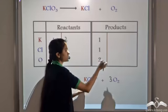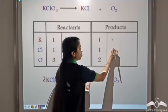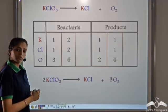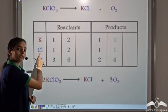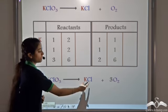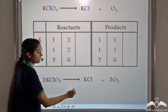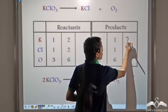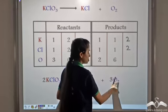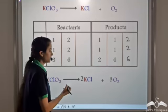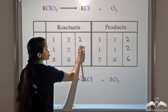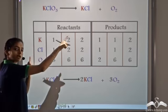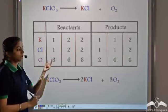On the product side, Potassium remains 1, Chlorine remains 1, but now we have 6 atoms of Oxygen. Now Potassium and Chlorine are not balanced. To balance them, we multiply KCl by 2, taking 2 molecules of KCl. This gives us 2 atoms of Potassium and 2 atoms of Chlorine on the product side, while Oxygen remains 6. We have not changed the reactant side.